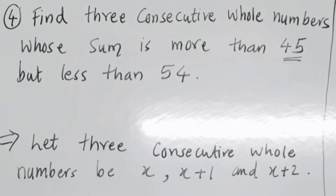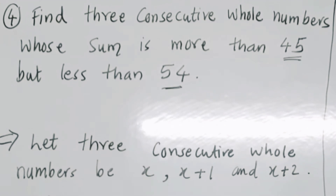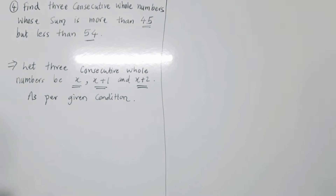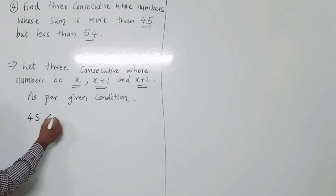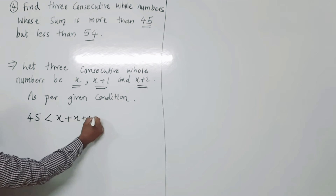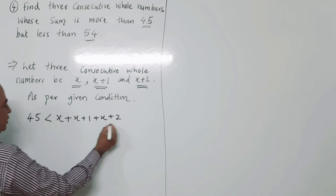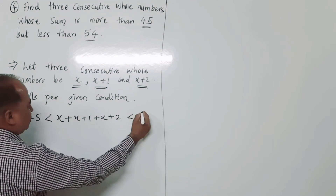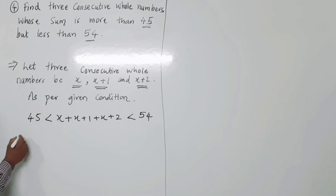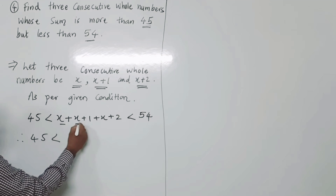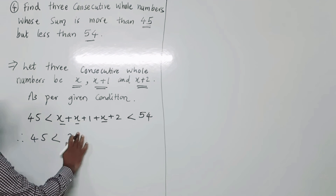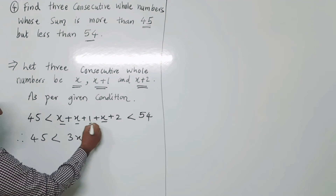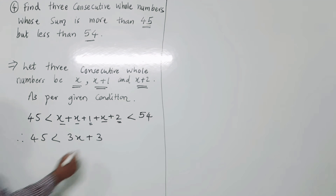Fourth example: Find three consecutive whole numbers whose sum is more than 45 but less than 54. Let the three consecutive whole numbers be x, x plus 1, and x plus 2. As per the given condition, the sum of these whole numbers is more than 45 and less than 54. So 45 is less than x + (x+1) + (x+2), which simplifies to 3x + 3, and this is less than 54.